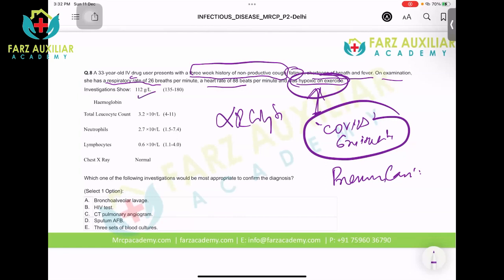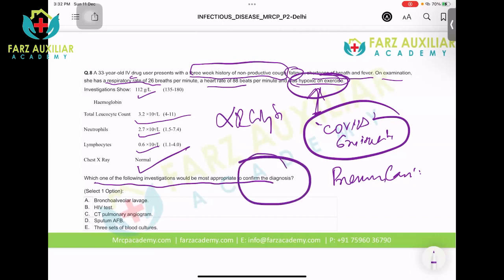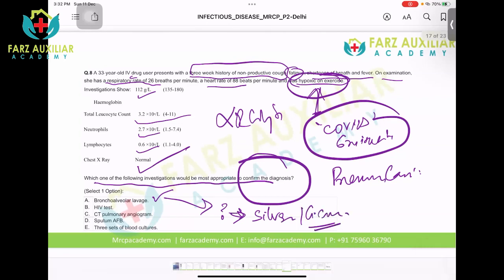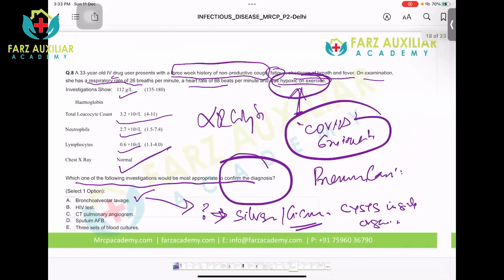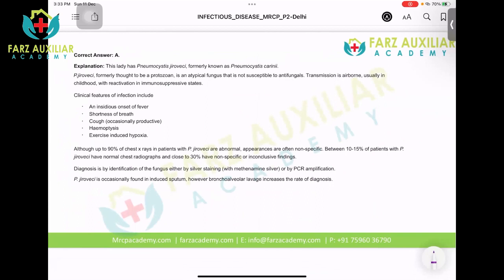Hb is 11.2, total count is low (expected in HIV), neutrophil count is also low, lymphocytes are low, chest X-ray is normal. Which investigation is most appropriate to confirm the diagnosis? BAL — bronchoalveolar lavage. You stain with silver staining (Gomori methenamine silver) or Giemsa staining, and you find an intracellular pathogen which is Pneumocystis — named so because there are cysts inside the organism.